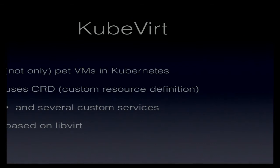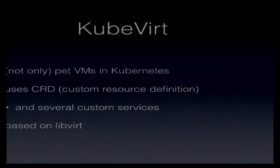KubeVirt is a Kubernetes add-on that allows you to run VMs in Kubernetes in the same cluster, using the same or similar resources you would normally use. It has custom resources for the virtual machine itself — you may have seen live migration for example — and several services to manage those resources. It's based on libvirt.